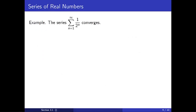Let's look at one final example, the sum from n equals 1 to infinity of 1 over 2^n. For this example, we need a fact, which is that 1 over 2^n equals 1 over 2^(n-1) minus 1 over 2^n.